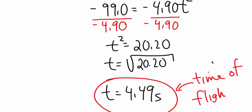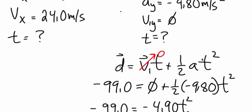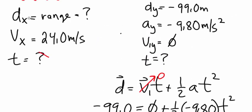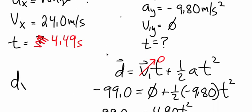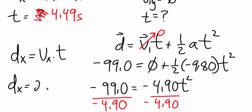Now that we have that time of flight, we can go back up to our X components right here. And we now know the time is 4.49 seconds. Because it is uniform motion, we can just use a d equals vt relation. So dx is 24 meters per second, times the time of flight, which is 4.49 seconds.